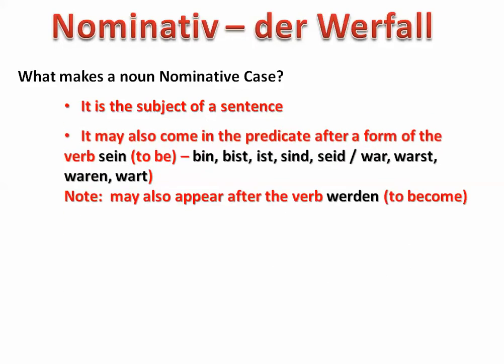which can be the present tense conjugations bin, bist, ist, sind, or seid, or a past tense conjugation like war, warst, waren, or wart, then it will be considered to be the predicate Nominative. We have this also in English. It can also appear in certain cases after the verb werden or after the verb heißen.